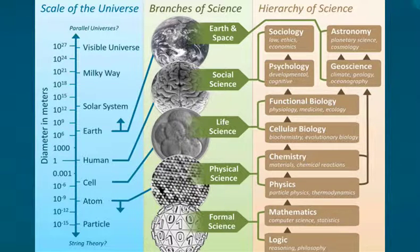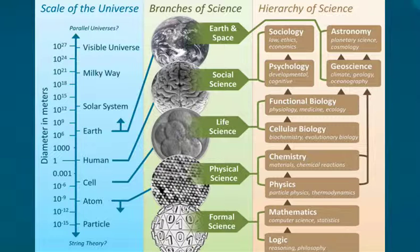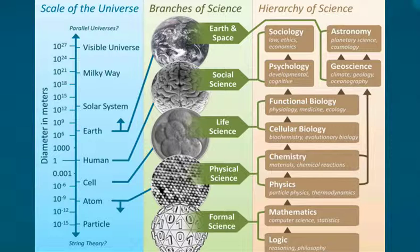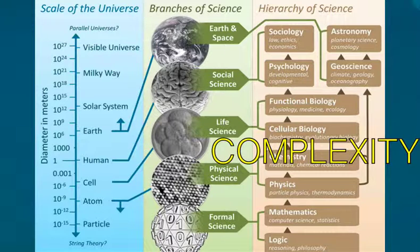However, since the middle of the 20th century, these different branches of science started to observe similar problems to which they had no traditional tools to explore. This was the time when science started to identify complexity as the common underlying property to these problems.